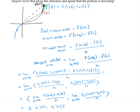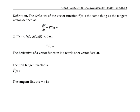This holds for vectors in three or more dimensions as well as vectors in two dimensions. This quantity is called r prime of a, and it's also called the derivative of r of t at t equals a. To summarize, the derivative of the vector function r of t is defined as dr/dt or r prime of t, equal to the limit as h goes to zero of r of t plus h minus r of t over h.